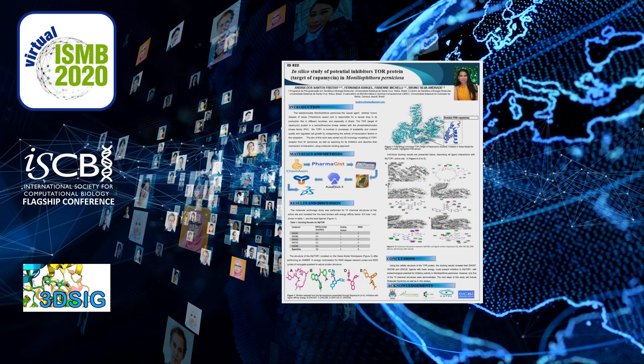The fungal pathogen infects the leaf region, the developing fruits, and the floral region of different species of the genus Theobroma sp. The disease caused by Moniliophthora perniciosa is called witch's broom, and is an important phytosanitary problem for cocoa production regions in a range covering tropical areas in South and Central America.